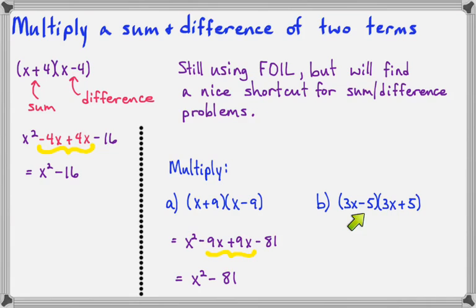On this last example, first times first is 9x squared. Outer times outer is plus 15x. Inner times inner is minus 15x. And last times last is minus 25. Now the two middle terms are going to add up to zero and we get 9x squared minus 25.